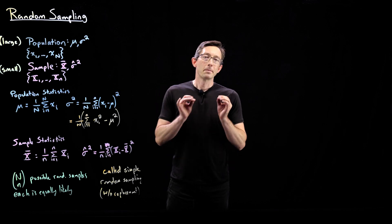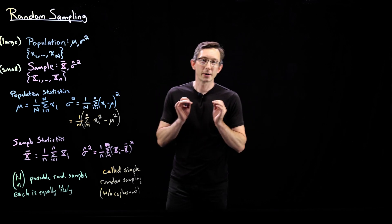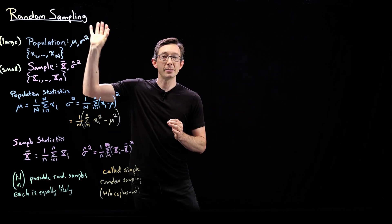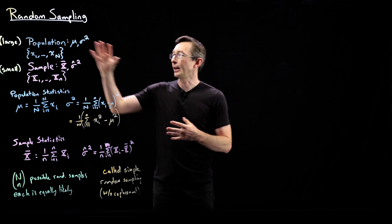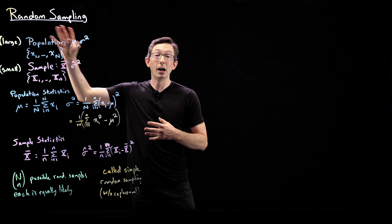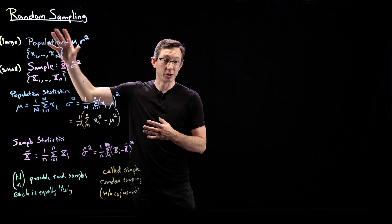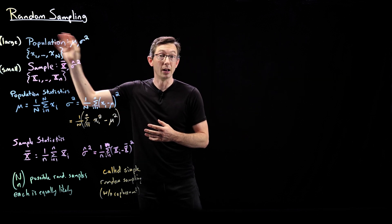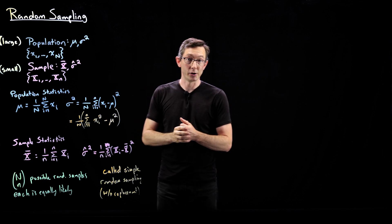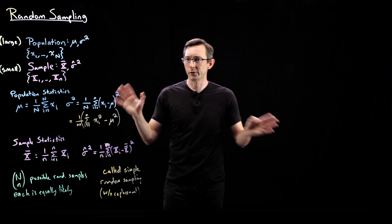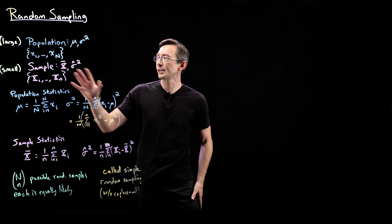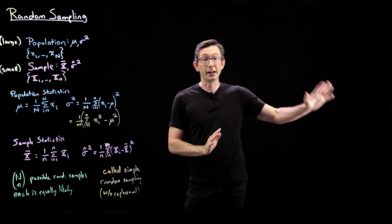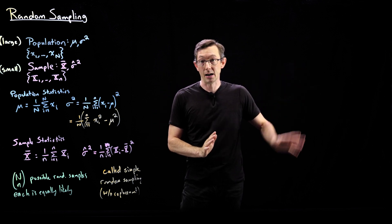Welcome back. We're talking about the theory of random sampling — using a random smaller sample to say something about a large but unknown population. This is useful all over in statistics and is an entry point to more advanced topics.